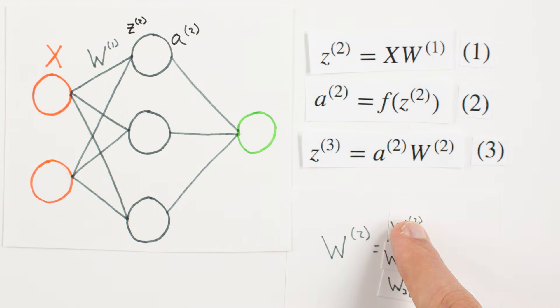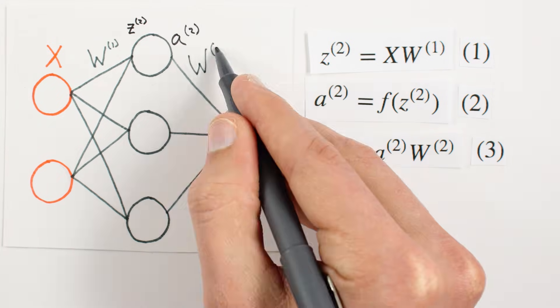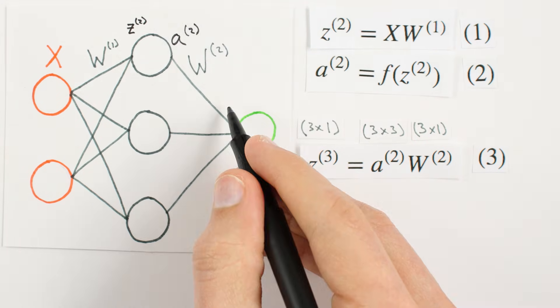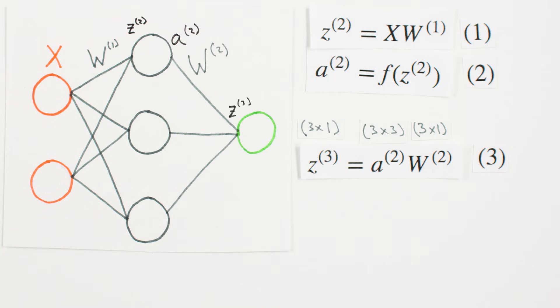W2 is of size 3 by 1, one weight for each synapse. Multiplying A2, a 3 by 3, by W2, a 3 by 1, results in a 3 by 1 matrix Z3, the activity of our third layer.